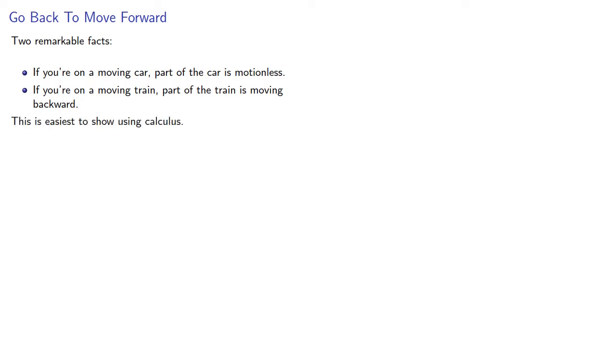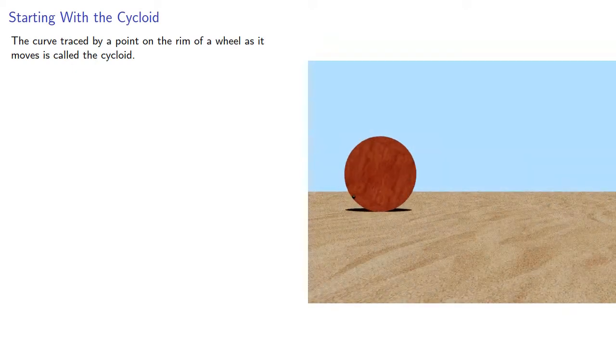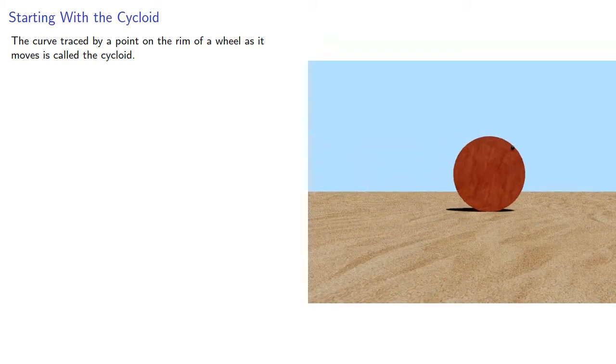This is easiest to show using calculus. So remember the curve traced by a point on the rim of a wheel as it moves is called the cycloid.